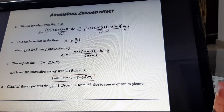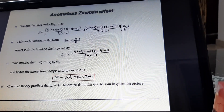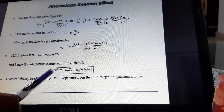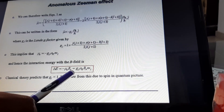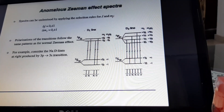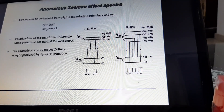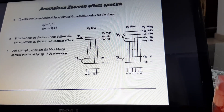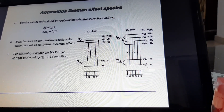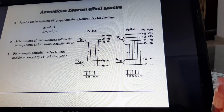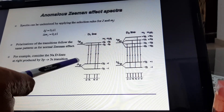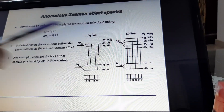In this effect, the overall change in energy, that is the splitting energy, is G_J · μ_B · B_Z · M_J. Thus, the anomalous Zeeman effect spectra is shown in this diagram. There are two types of lines for the sodium atom: the first lines are called D1 lines and the second are called D2 lines. In the D1 lines there are 4 sub-lines, and in the D2 lines there are 6 lines.